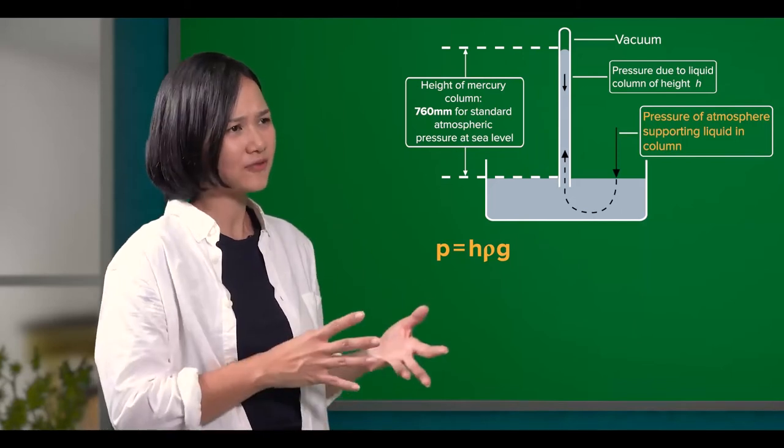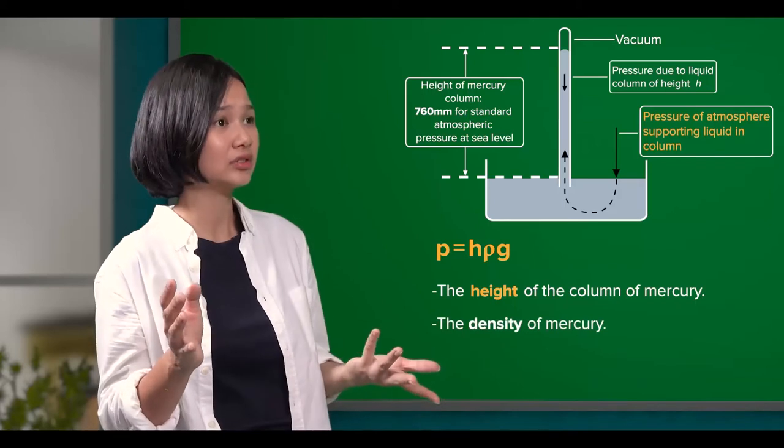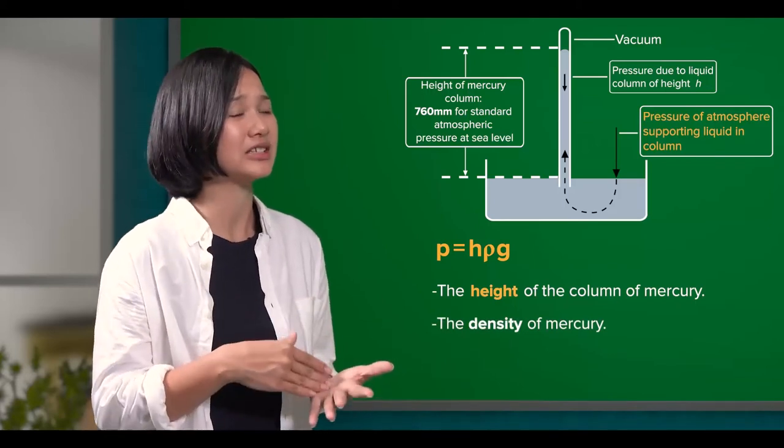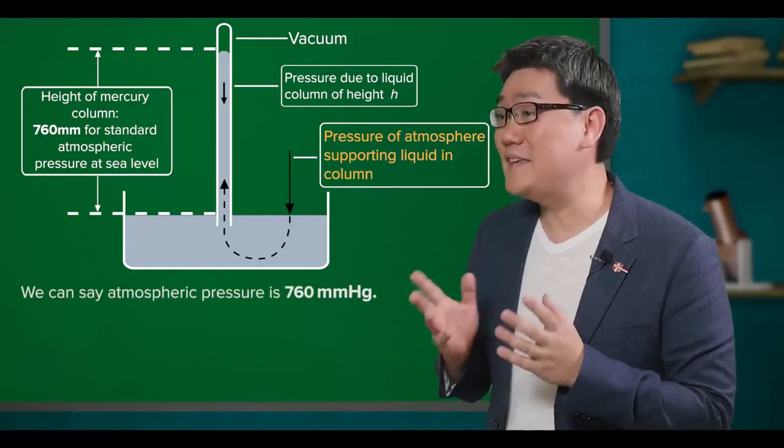So, atmospheric pressure can be obtained by looking at the height of the mercury level, multiplied by the density of mercury, multiplied by the gravitational constant. Yes.